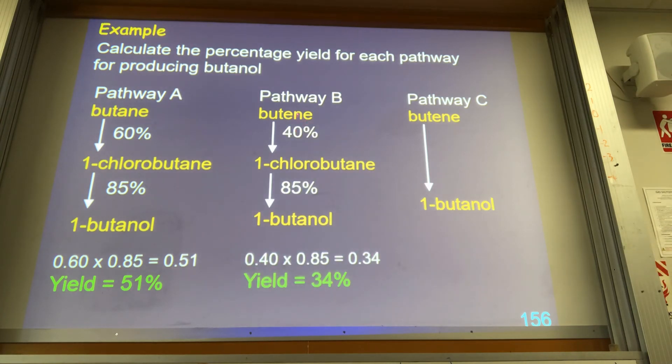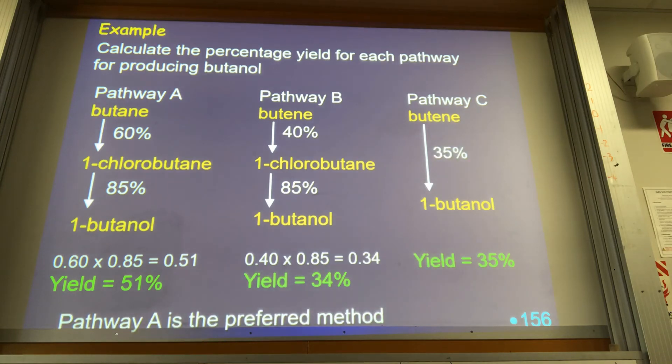Once you start doing that addition reaction and you have to deal with the 2-chlorobutane problem, yield drops dramatically. Obviously the same yield at the same step, but two-thirds of the yield here, you get two-thirds of the total yield overall. What happens in pathway C, the direct reaction? 35 percent, no good. That's why we use the chloro pathway.